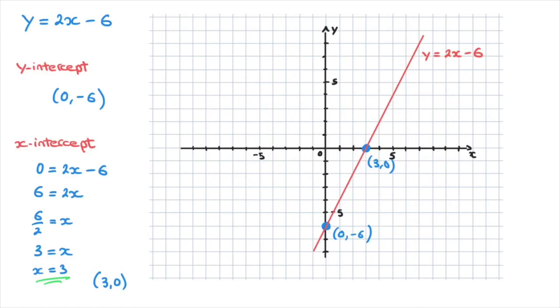Now, the y-intercept, remember, we can simply read straight off the line equation. And the x-intercept we find by replacing y inside the line equation by 0 and solving for x. And in this case, that led to x equals 3. And that's how we draw lines from their equations.